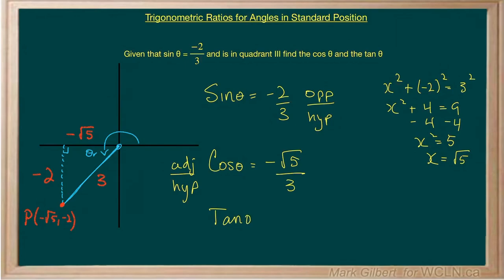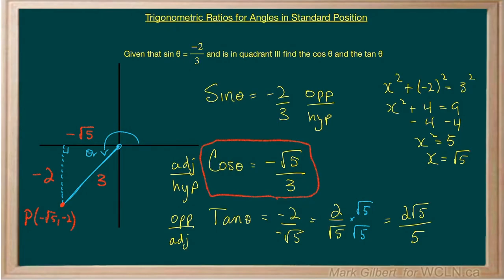The tangent of theta, that's the opposite over the adjacent. So that'll be negative 2 over negative root 5, which becomes positive 2 over root 5. And remember, the denominator is often rationalized, which gives us 2 root 5 over 5. And there's our other two ratios.